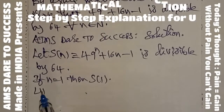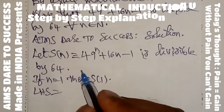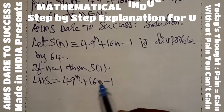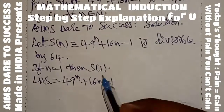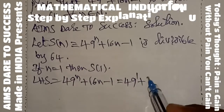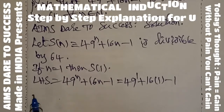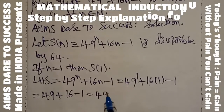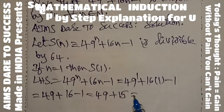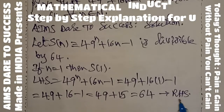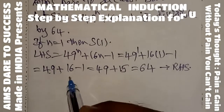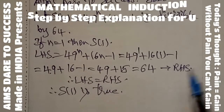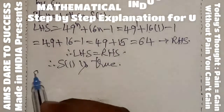Start our journey. If n is equal to 1, then S of 1 — take the LHS value: substitute n=1 to get 49 power 1 plus 16 into 1 minus 1, which equals 49 plus 16 minus 1, that is 49 plus 15, which is 64. It is divisible by 64. Therefore LHS equals RHS. So S of 1 is true.